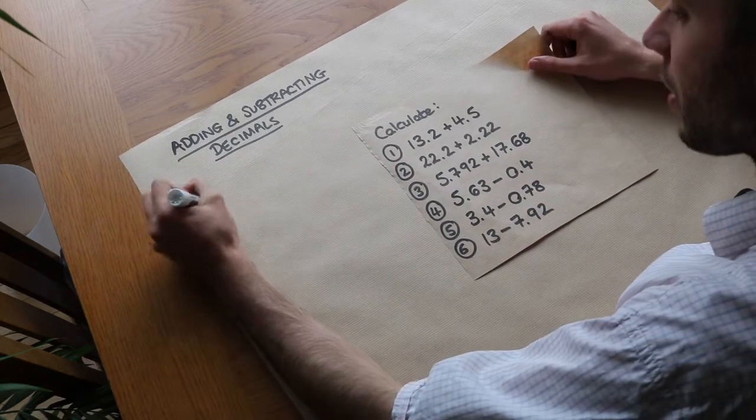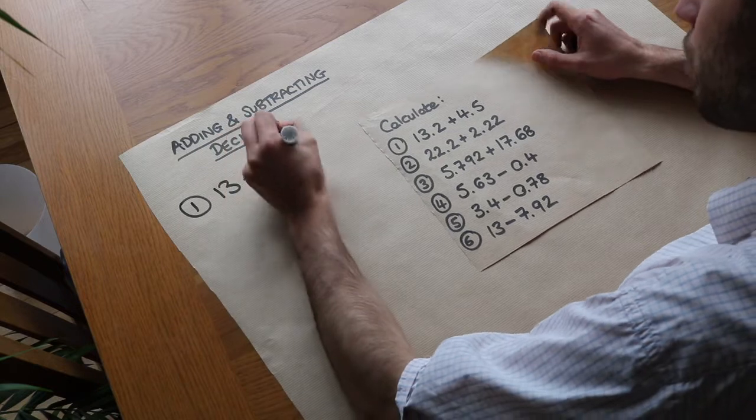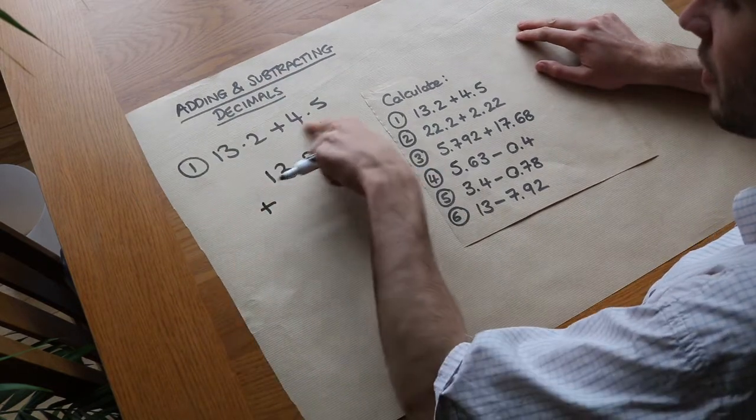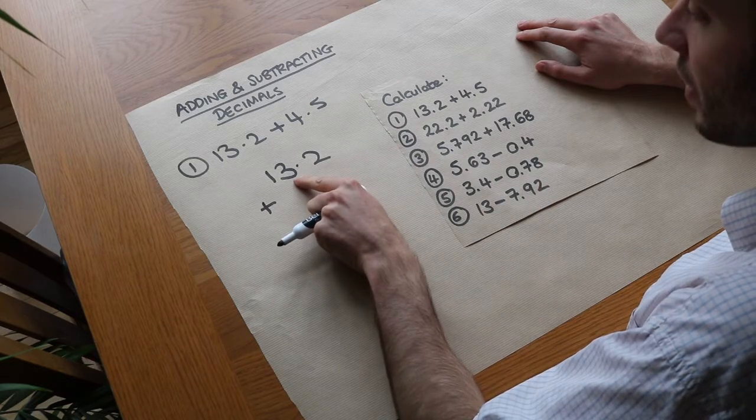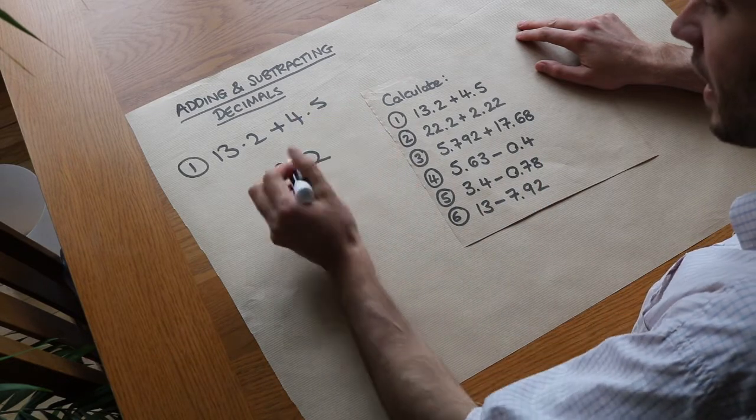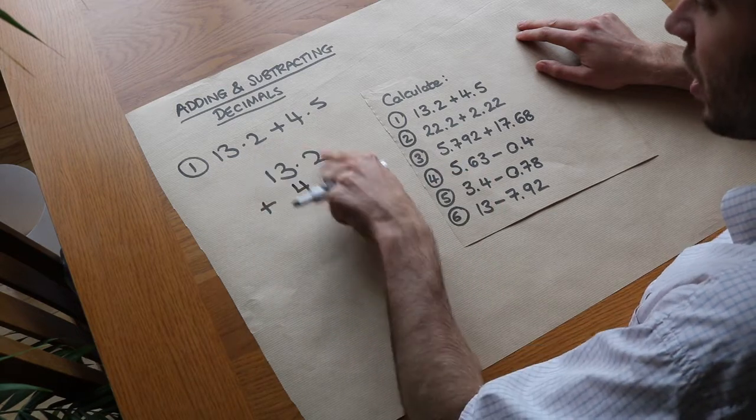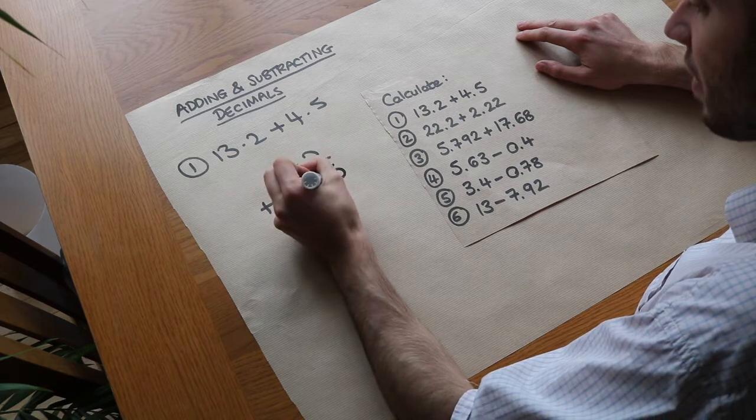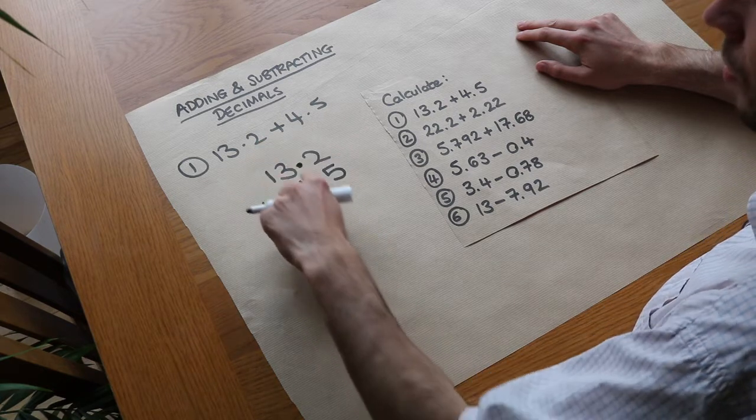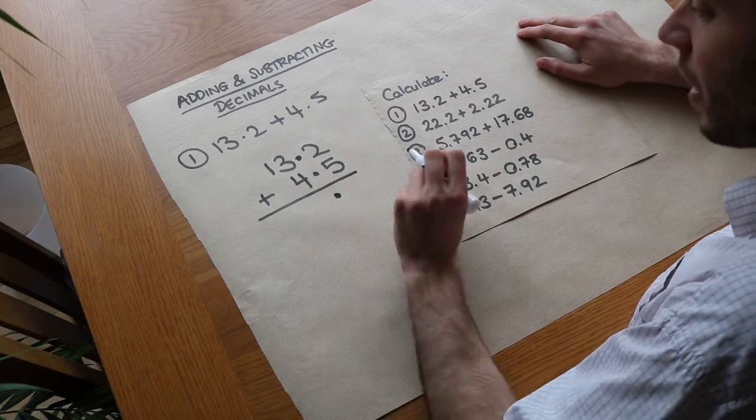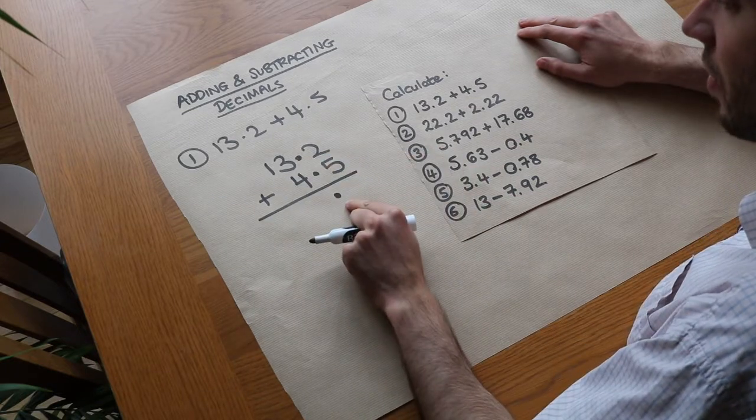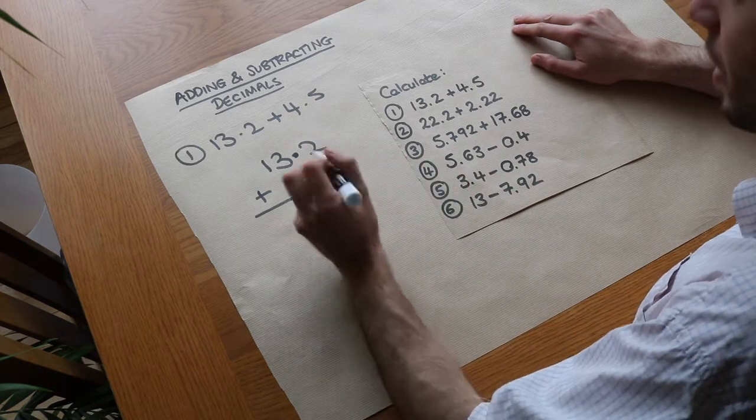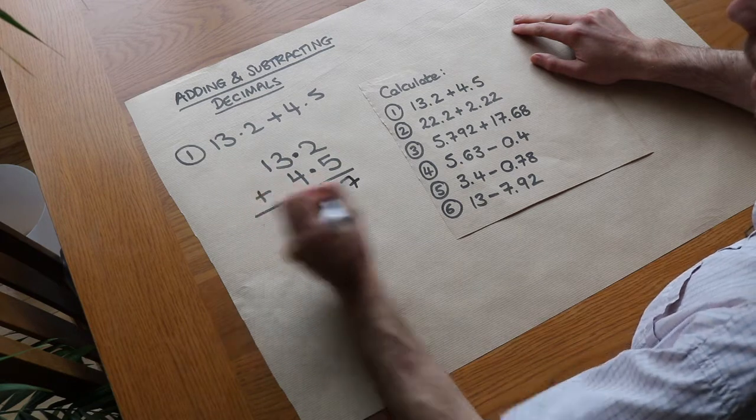Let's say we want to do this first one: 13.2 plus 4.5. When we do column addition, where do we put these digits? We can see that's the units digit, so we make sure the units digit here is in the same place, and then the tenths digit is in the same place. The easy way to do it is to just make sure that these decimal points line up. Now we have a decimal point in exactly the same place in the answer. We do it the normal way: 2 plus 5 is 7, 3 plus 4 is 7, and then 1 plus nothing is 1.